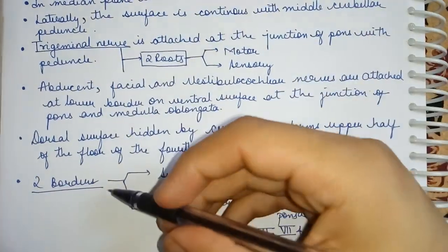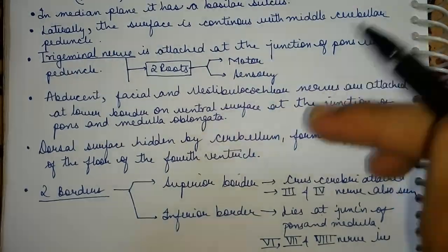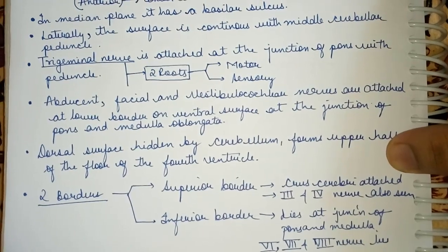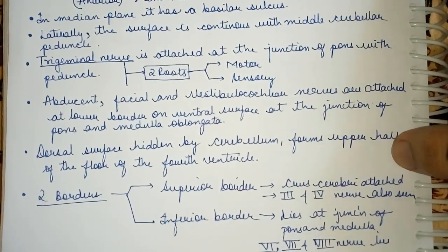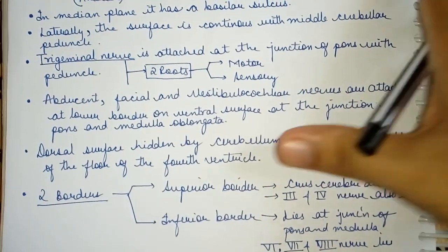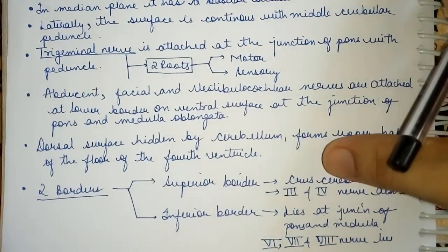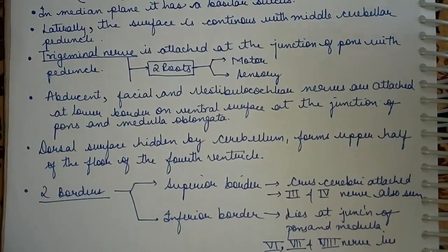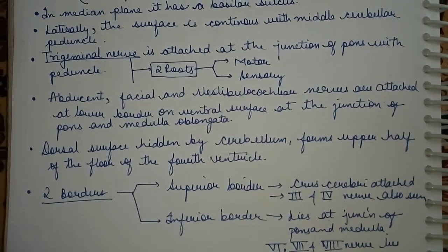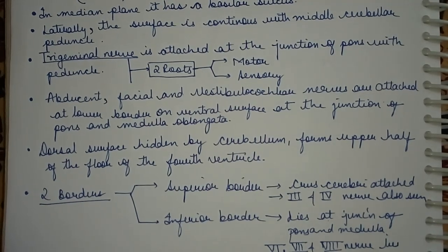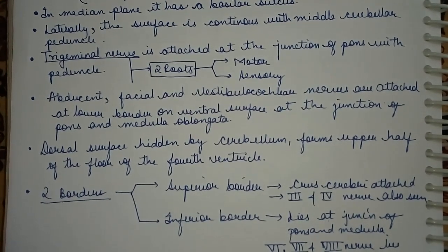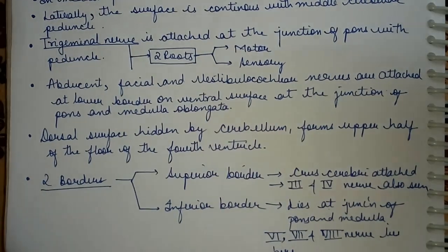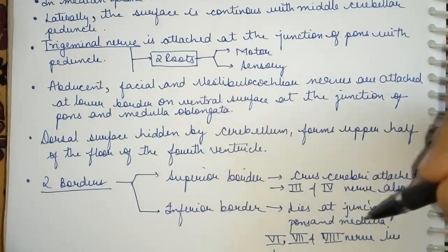Pons has two borders — a superior border and an inferior border. At the superior border, the crus cerebri is attached, and the 3rd and 4th cranial nerves — oculomotor and trochlear — are also seen there. At the inferior border, the 6th, 7th, and 8th nerves are visible, lying at the junction of your pons and medulla.